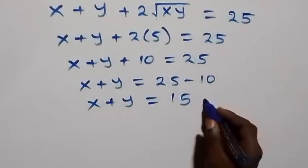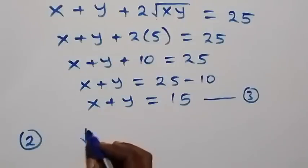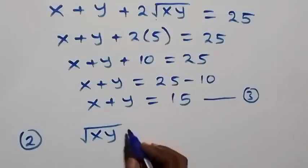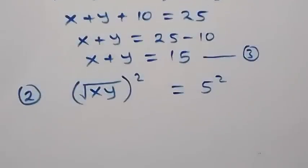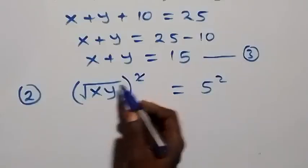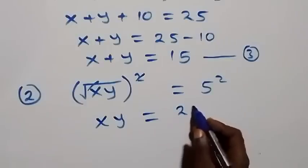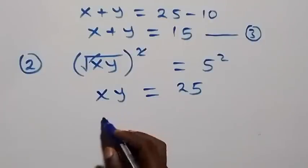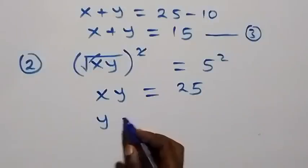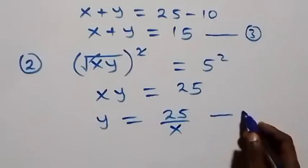Let's label this as equation 3. Then from equation 2, we square both sides: (√(xy))² = 5², giving xy = 25. We can then write y = 25/x, and let's call this equation 4.